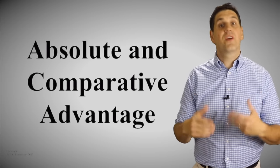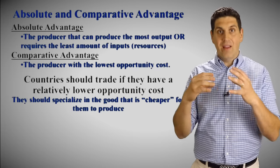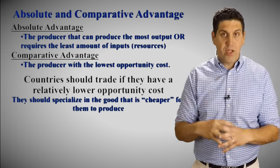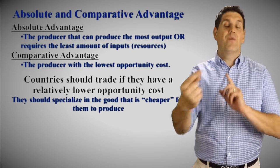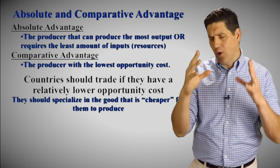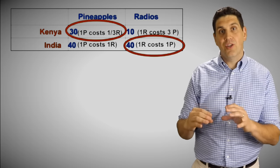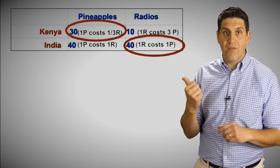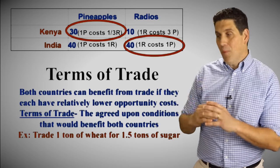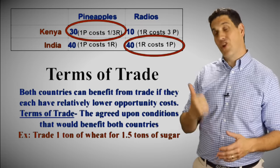That brings us to the hardest part of this unit: comparative advantage. Comparative advantage is the idea that countries should specialize in the product where they have a lower opportunity cost. There are two different concepts: absolute advantage and comparative advantage. Absolute advantage is easy — you just figure out who produces more. Comparative advantage requires some calculations, and it tells you who should specialize in what. You also have to learn the idea of terms of trade, which means how many units of one product should be traded for the other product to benefit both countries.